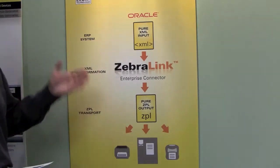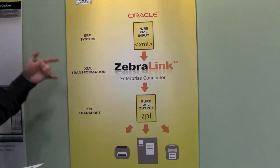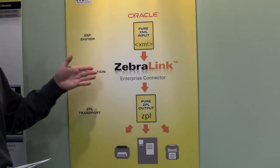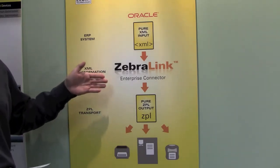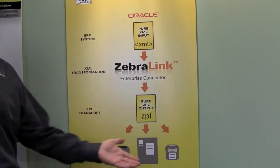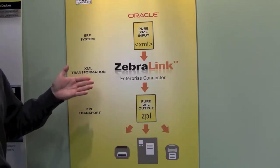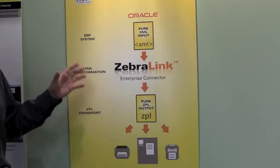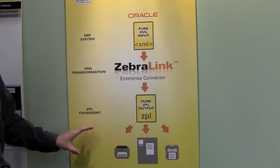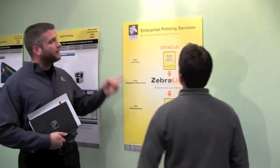The printers don't natively understand XML, so what we have is a transformation tool — it's part of the Zebralink suite of tools. Enterprise Connector converts the XML into ZPL, which the printers can then produce labels from. There's also Zebranet Bridge, which allows the network administrators to manage all of the printers.